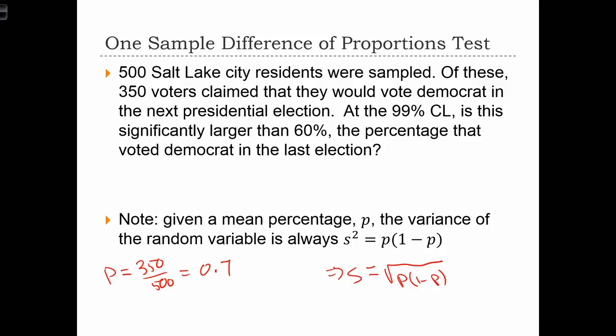So once we know P, the question doesn't include a standard deviation in it, because given that this is a proportion, we can always calculate the standard deviation using the proportion itself. Questions of differences of proportions won't give you a sample standard deviation. They'll only give you the sample proportion, because from the sample proportion, we can always derive the sample standard deviation.